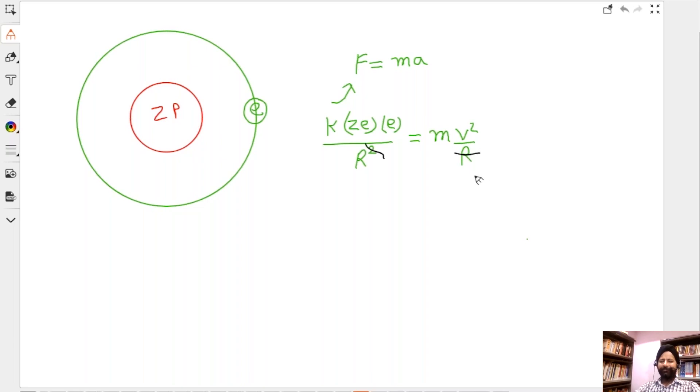But then we are saying this is also basically going to follow the postulate given by Bohr, as in mvr should actually be equal to n times h by 2π. It has to follow this, right? So then you can either eliminate velocity or you can eliminate radius to get whatever. So you have two equations here, equation one and equation two.